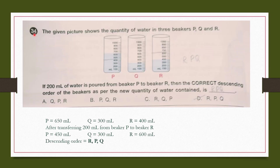Question number 34: The picture shows water in 3 beakers P, Q and R. If 200 ml of water is poured from beaker P to beaker R, find the new descending order. Initial quantities: P is 650 ml, Q is 300 ml, R is 400 ml. After transfer: P becomes 450 ml, Q stays 300 ml, R becomes 600 ml. Descending order is R, P, Q. So the answer is option D.